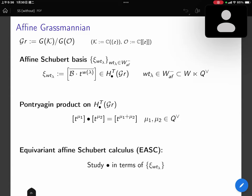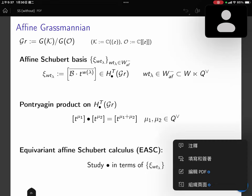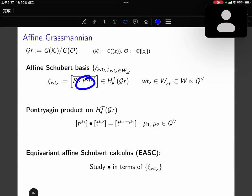The affine Grassmannian is defined like this. Here K is the ring of Laurent series and O is the formal power series ring. There's something similar to G mod P. We have affine Schubert basis, which is the fundamental class of the orbit closure. But here the B is the affine analogue of Borel, the Iwahori. And T here is the torus fixed point of the affine Grassmannian.